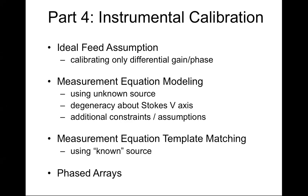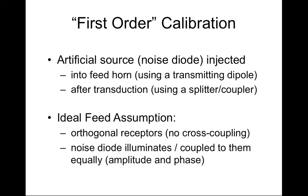First-order calibration uses an artificial source of polarized flux, typically a noise diode. You run a current through it and it generates a signal, then couple that signal equally to your two polarizations. You can do this by putting a small transmitting dipole into your feed horn — orienting that dipole at 45 degrees with respect to your x and y axes should induce equal and in-phase responses in each of your x and y signal paths.